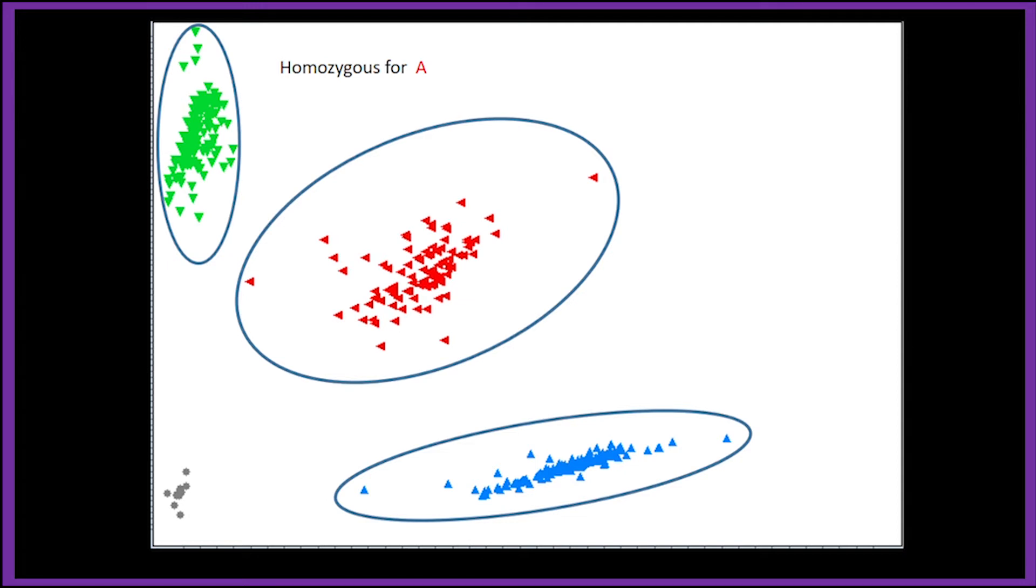The red cluster shows plants that are heterozygous for the allele from both parents and the blue cluster represents plants that are homozygous for the allele from the unadapted parent.